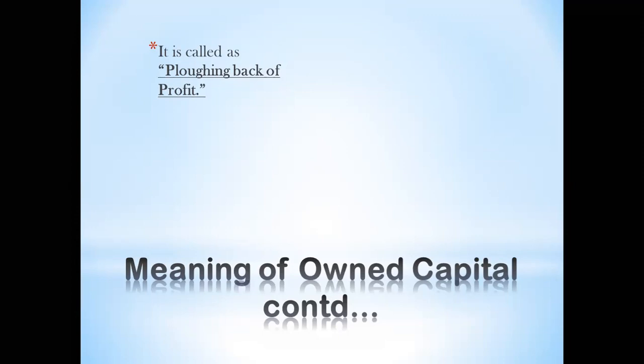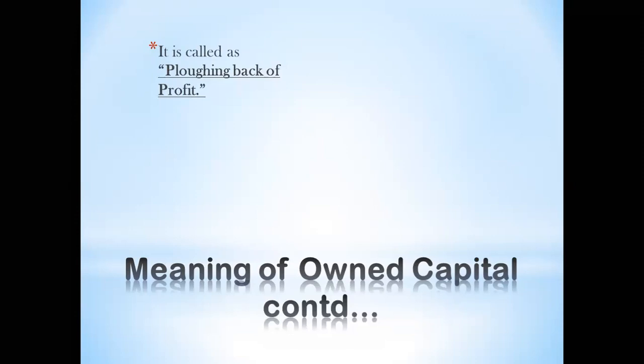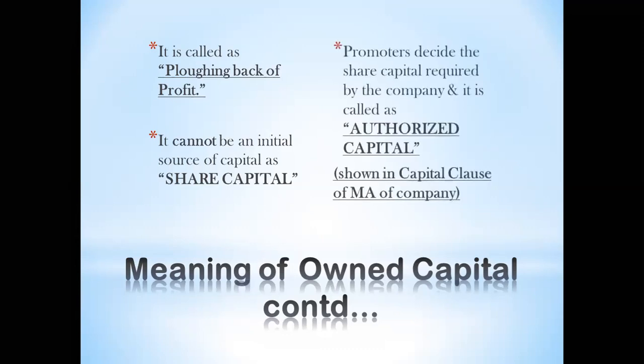Retained earnings are an internal source because the money is used from within the company to finance the company rather than given to outsiders. However, retained earnings cannot be the initial source of capital — when the company has not yet earned profit, you cannot invest money back into the business. This source of capital exists only once the company is established and earning profit; then you keep a certain amount as reserves to utilize later.